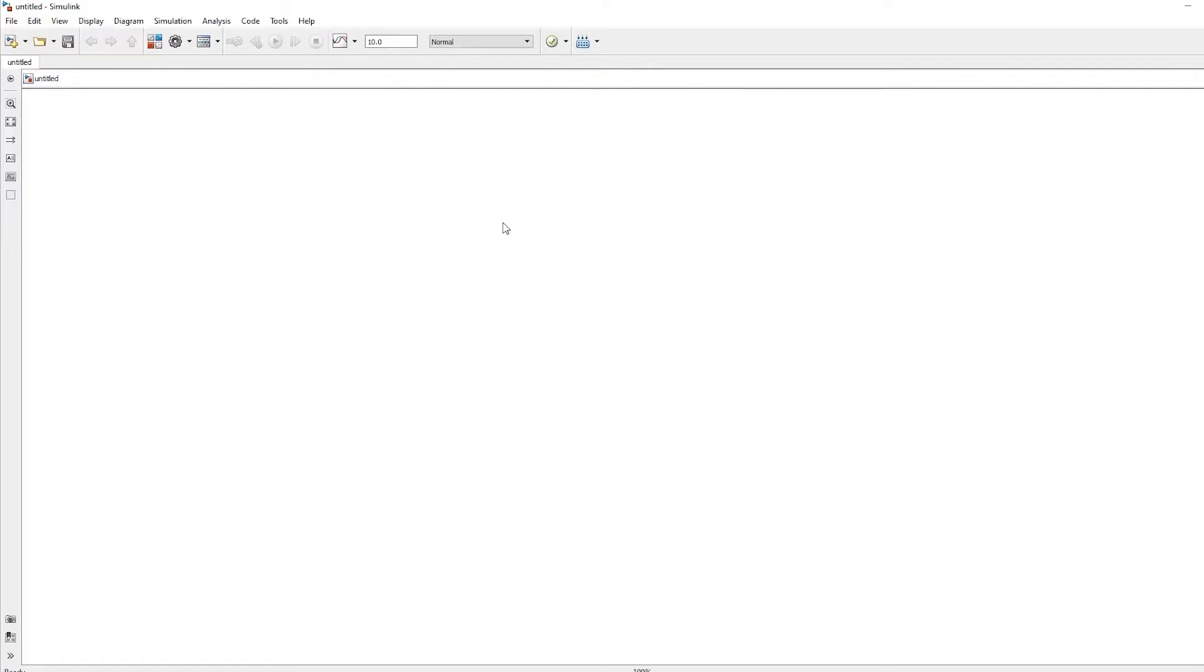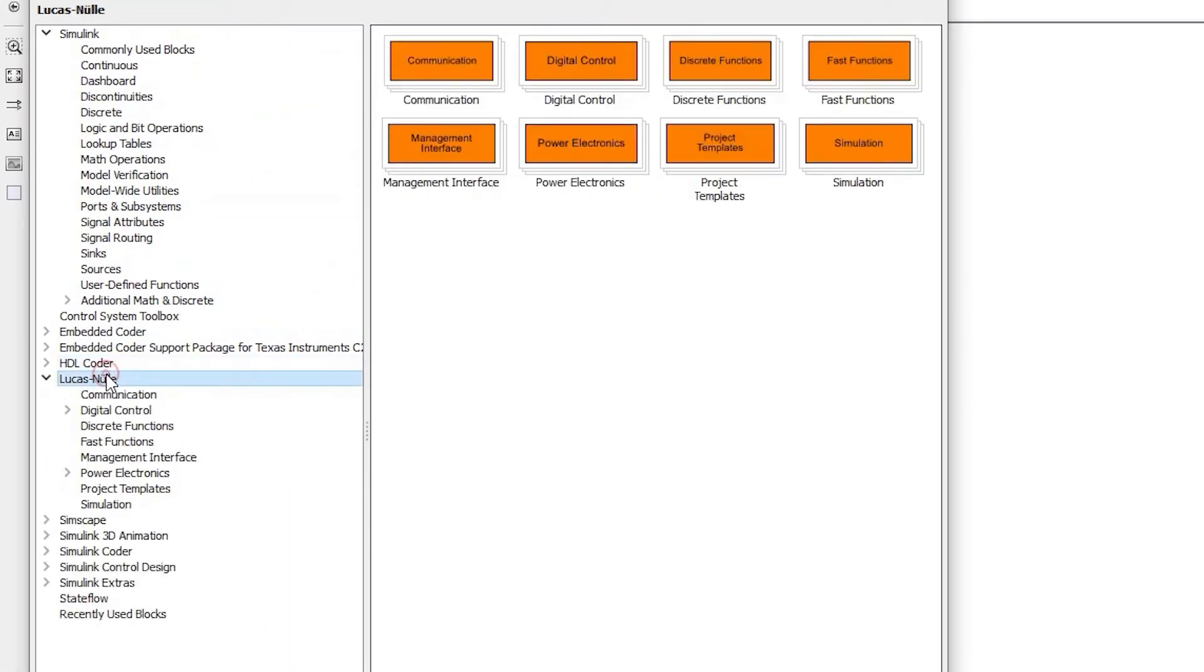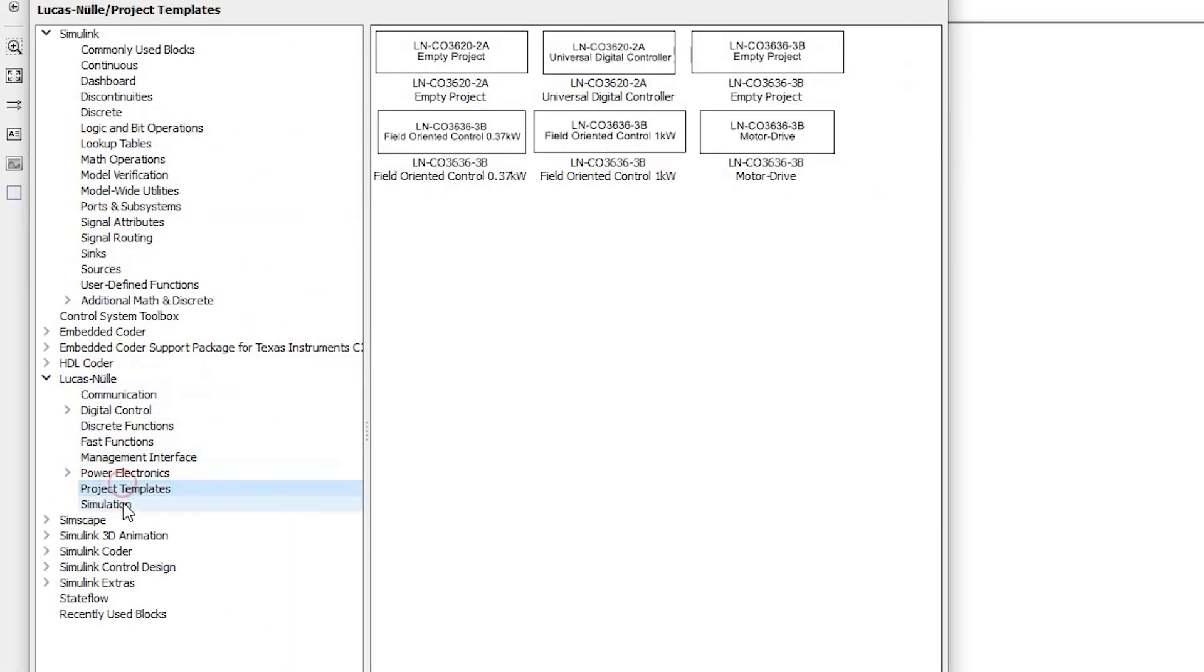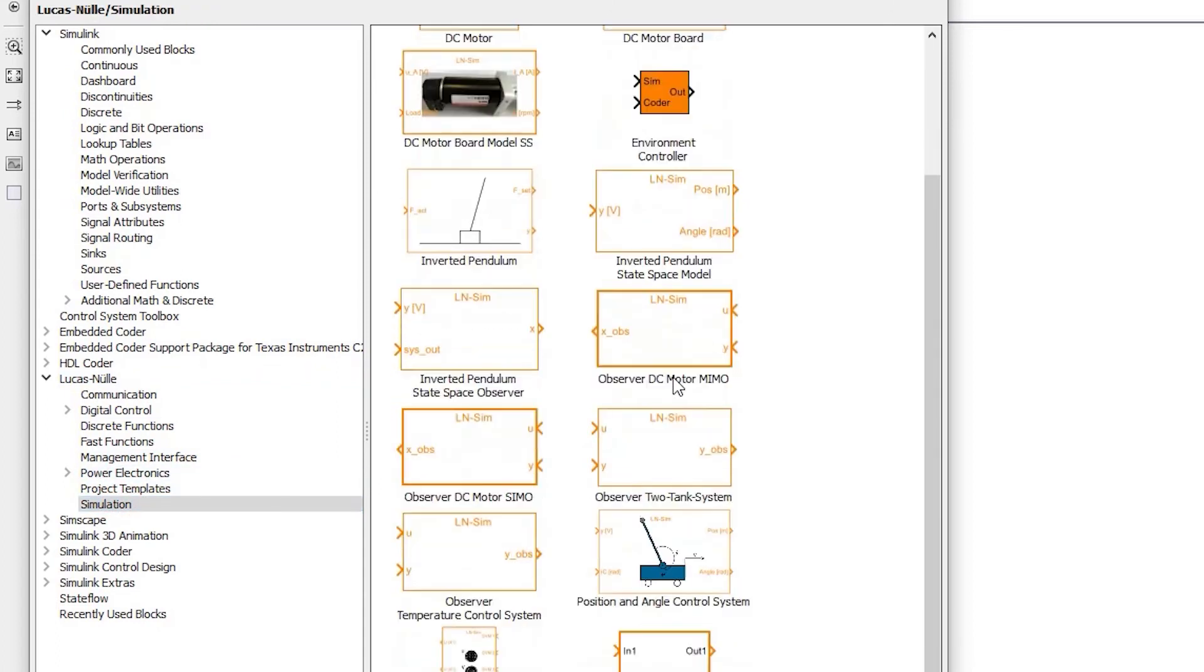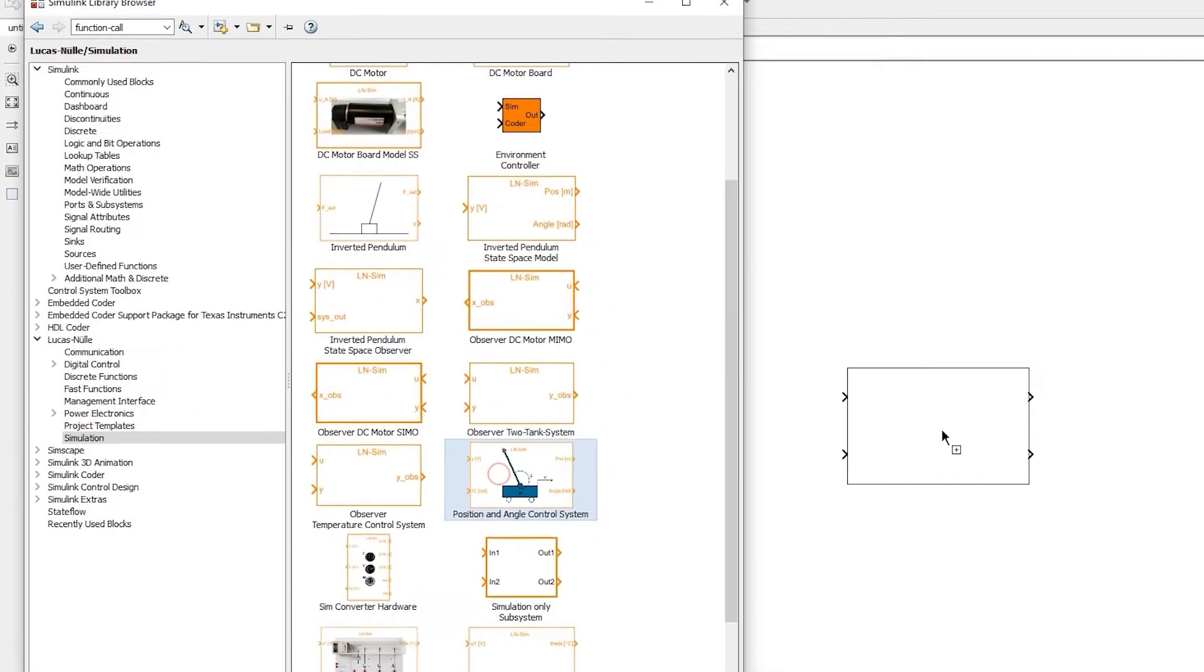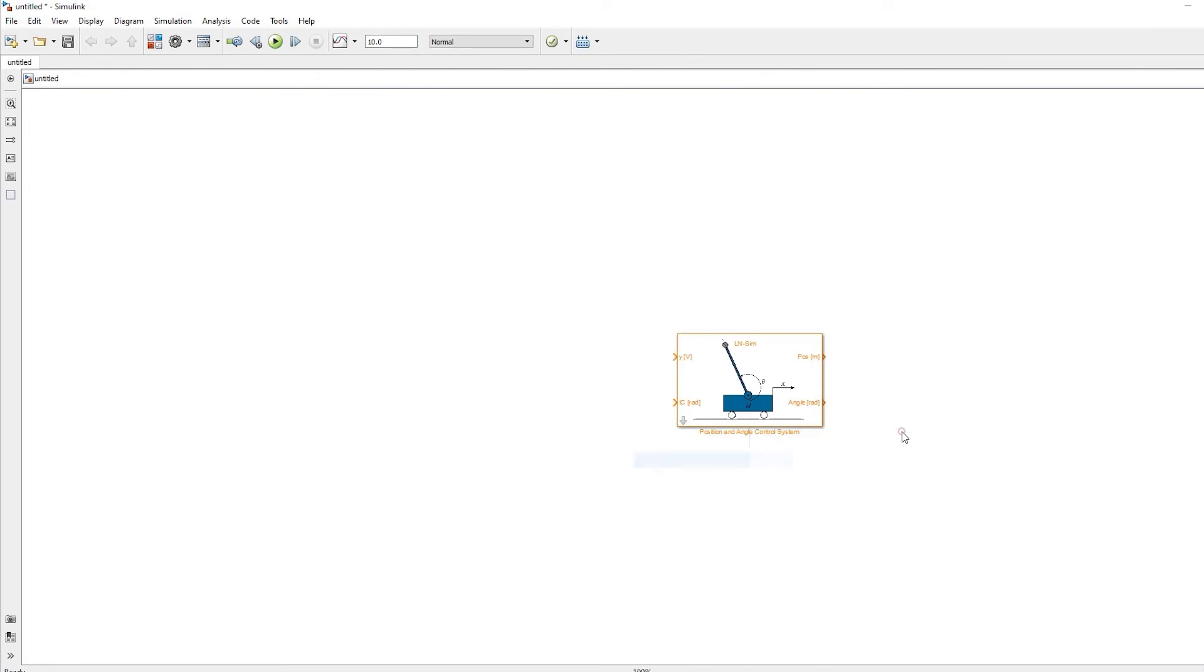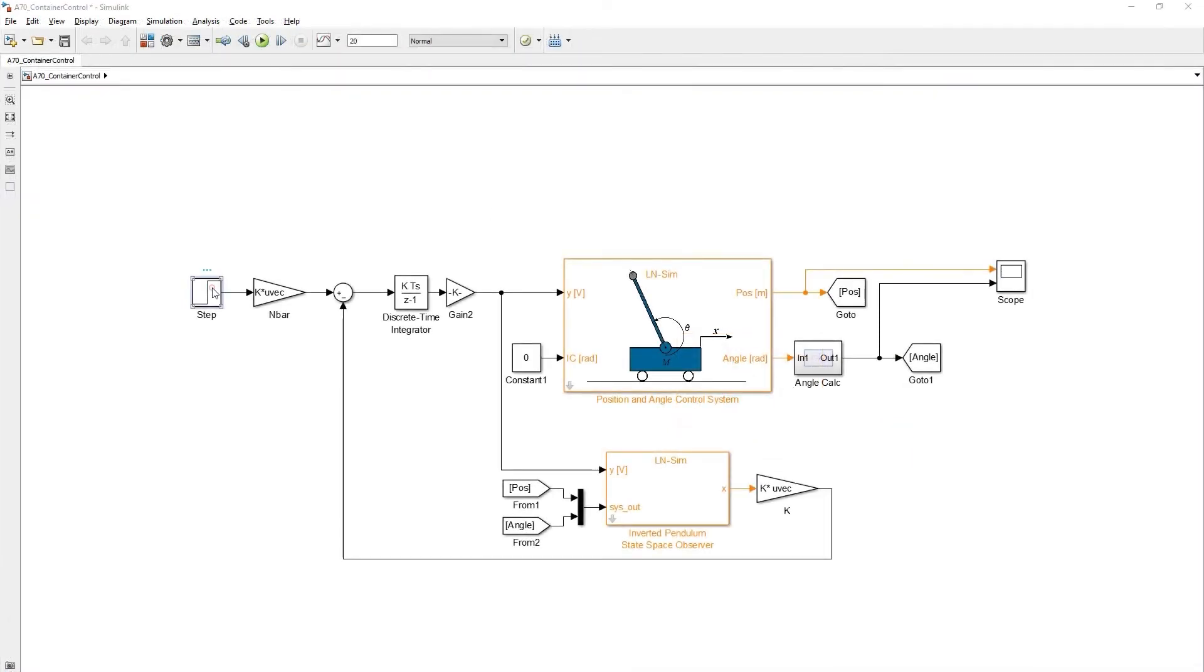Here you can also benefit from all the advantages of MATLAB Simulink. The software has been specially optimized for writing control algorithms. By independently developing a control loop in the form of function block and signal diagrams, the students further deepen their understanding.